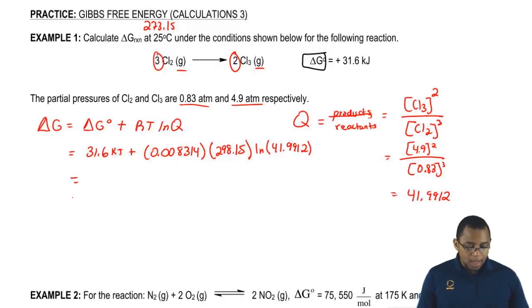When we plug all that in, so we're going to do ln of 41.9912 times 298.15 times 0.008314 plus 31.6. When you do all that, that gives you 40.86 kilojoules.